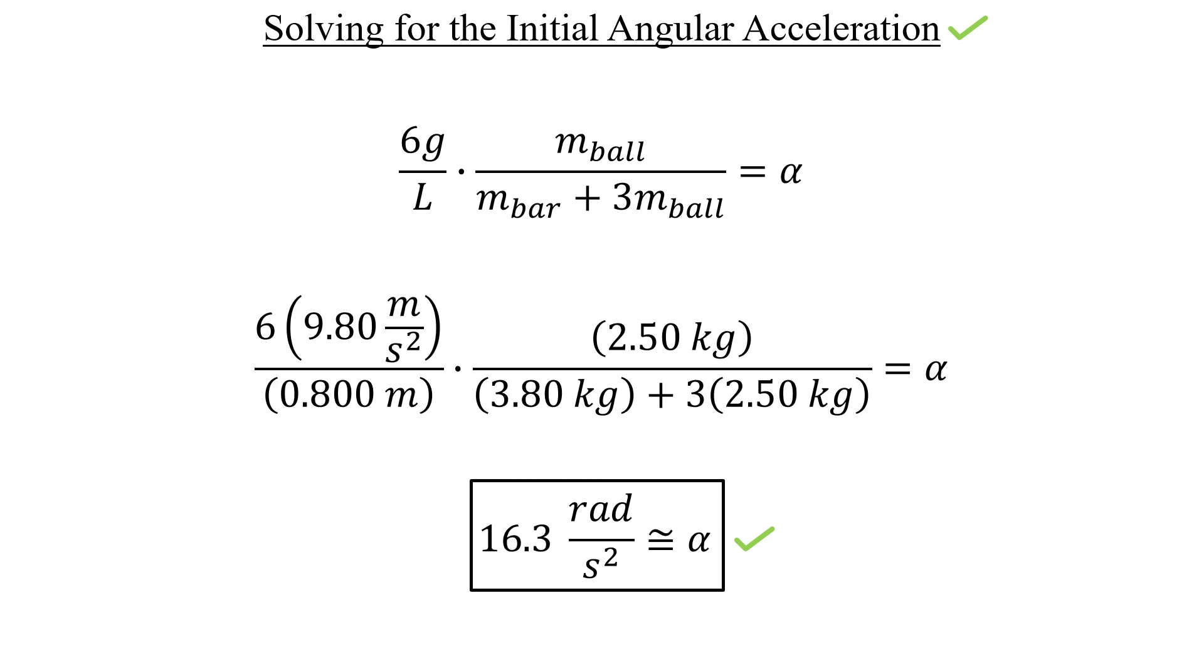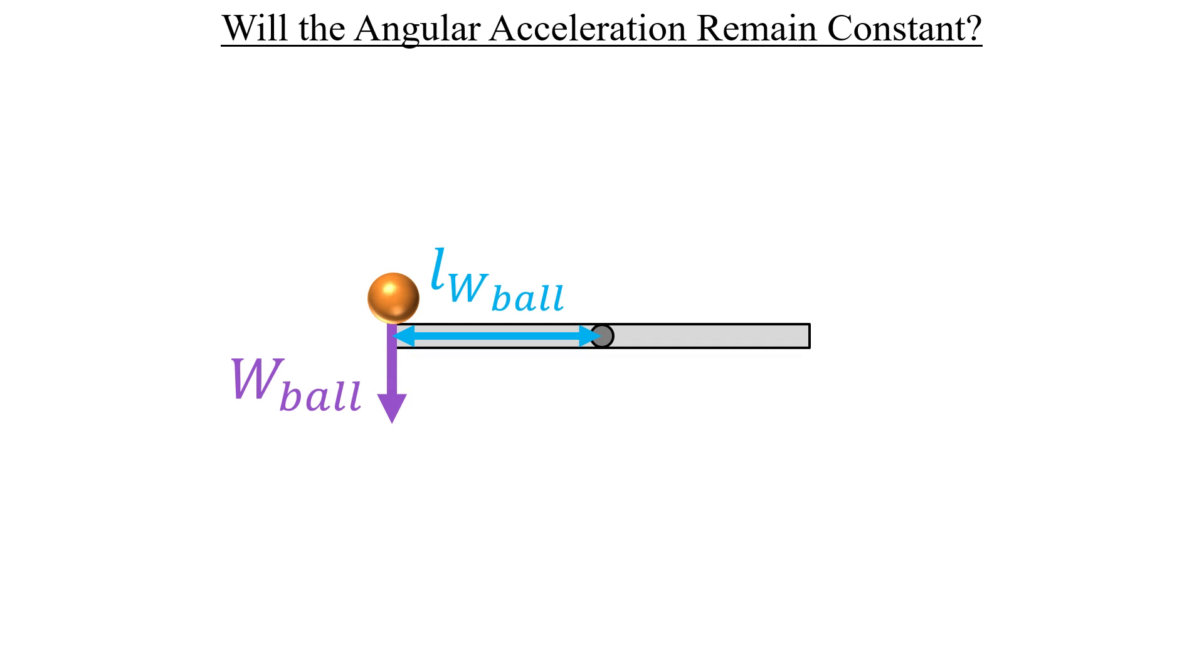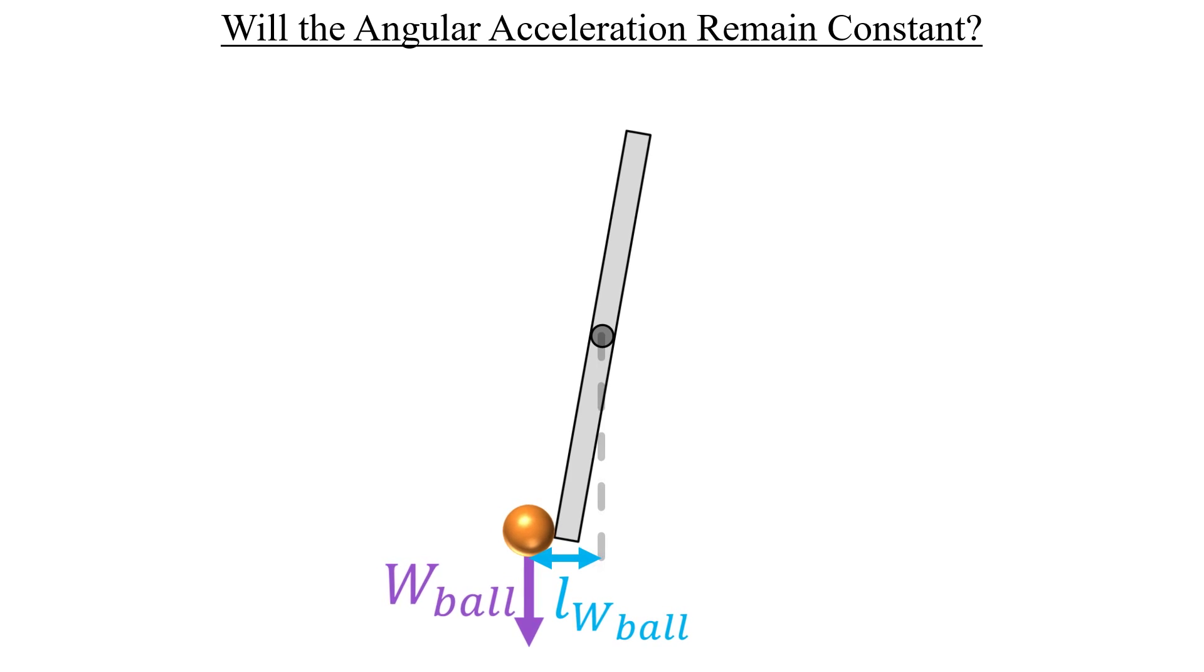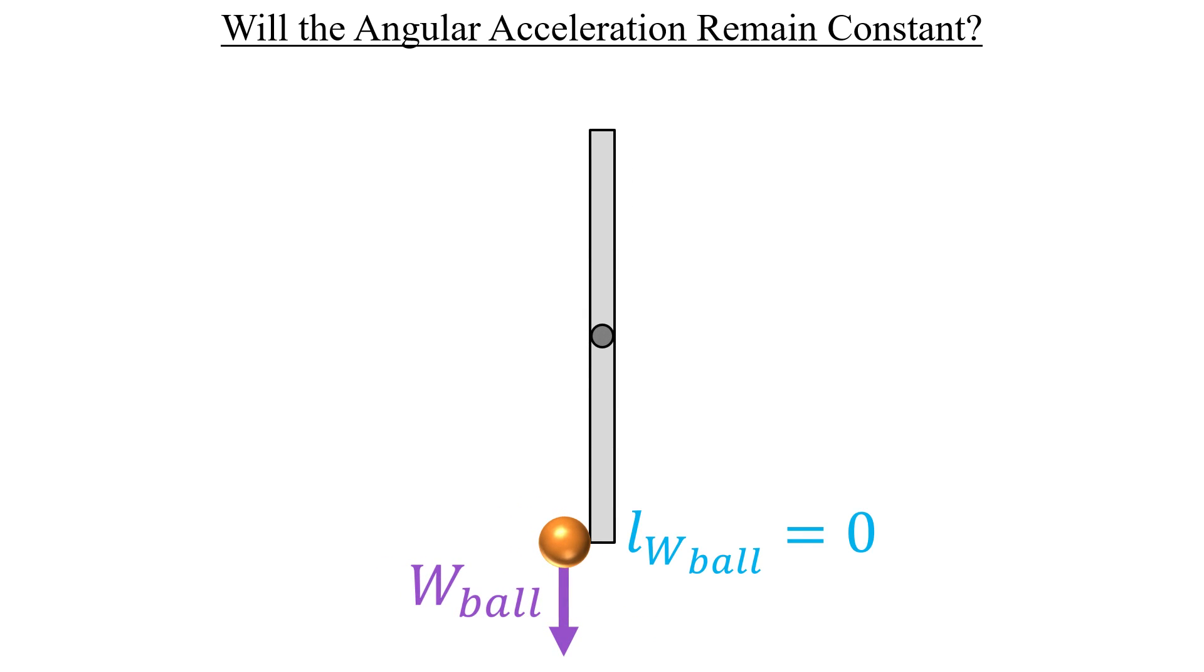For part B, let's take a look at our picture again and focus on the force and the lever arm of our torque. During the rotation, the lever arm will become smaller and smaller until eventually it just becomes zero once the bar is in a vertical position.